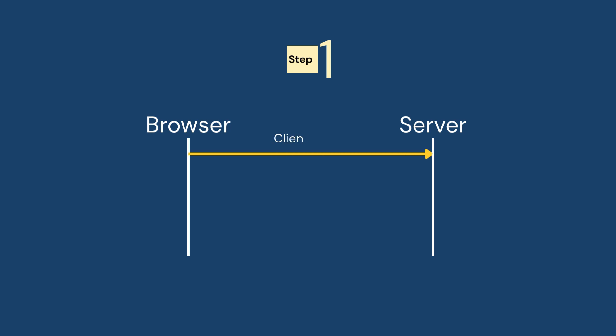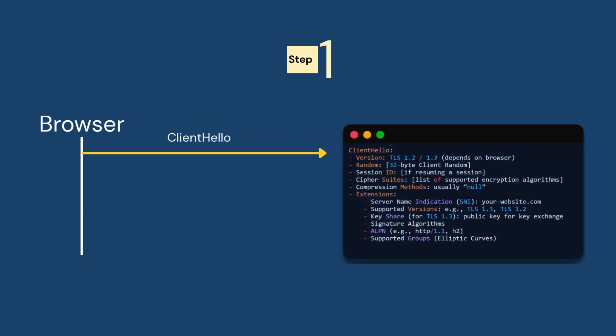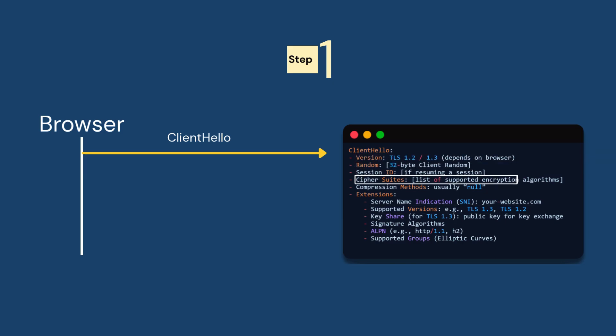Step number one: your browser says hi. This step is called Client Hello. It says, 'Hey server, I would like to talk securely. I support these versions of TLS and these encryption methods. Also, here's a random number so we can make our own key later.' This client random is used later to generate the final symmetric session key.